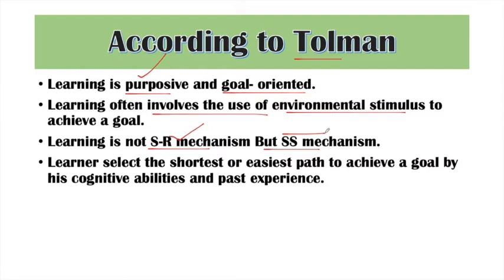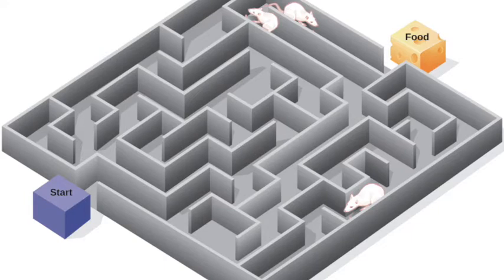SS mechanism means 'what leads to what' — if we do this action, what will happen, and what benefit will we get from the next action. The learner uses their cognitive abilities in the learning process to reach their goal, and acquires the shortest and easiest path available.